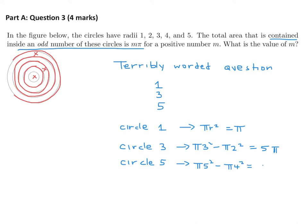So that would basically be calculated with pi times 5 squared minus pi times 4 squared. So that's 25 minus 16, which is 9 pi. And then you have to add these guys up to get the total area, which would be 15 pi. And therefore, 15 pi equals your m times pi, and therefore m is equal to 15. And this is a terribly worded question.